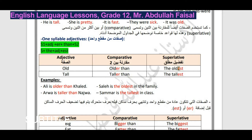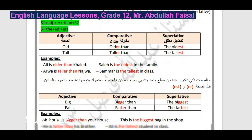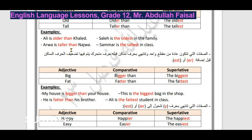أمثلة: Saleh is the oldest in the family - صالح هو الأكبر سناً في العائلة. Arwa is taller than Najwa - أروى أطول من نجوى، نضيف ER. Summer is the tallest in class - هذا تفضيل مطلق، هي الأطول في الصف.